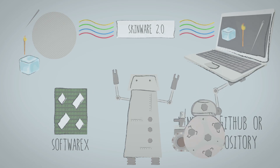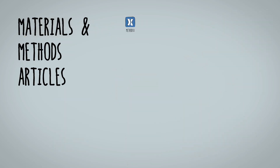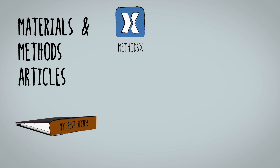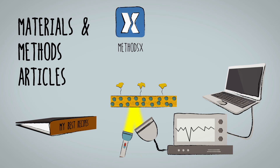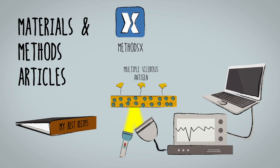Materials and methods articles, which are published in journals like MethodsX, help researchers share and get credit for the improvements they make to scientific recipes, such as reusing and adapting existing techniques for detecting antibodies. In their method article published in MethodsX, Italian researchers describe how to detect antigens associated with multiple sclerosis, saving other researchers a lot of time in the lab.